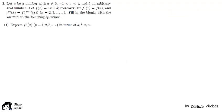Let a be a number with a different from 0, and minus 1 less than a less than 1, and b an arbitrary real number. Let f of x equal to ax plus b. Moreover, let f1 of x equal to f of x, and fn of x equal to f of fn minus 1 of x, for n equal to 2, 3, 4 and so on.